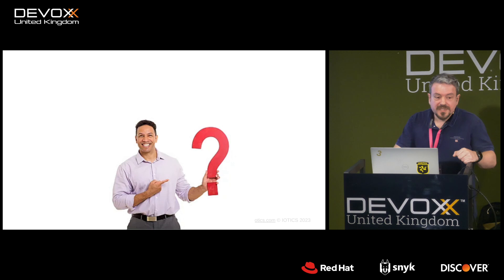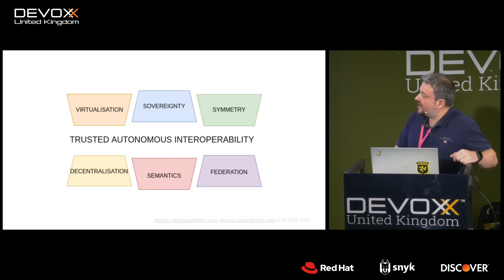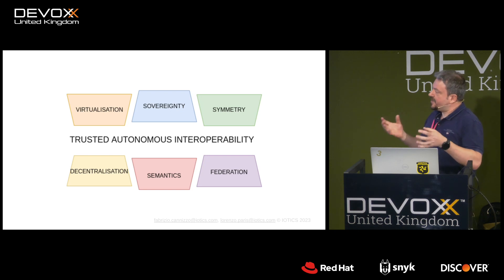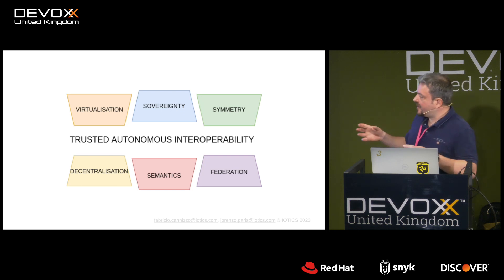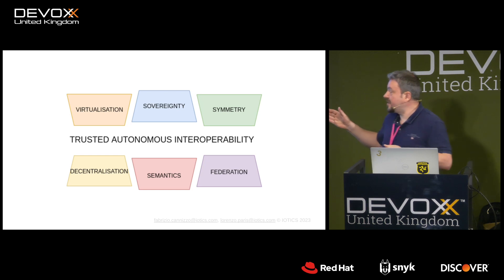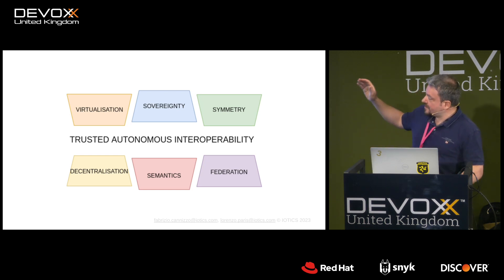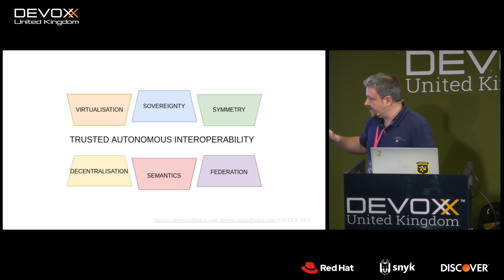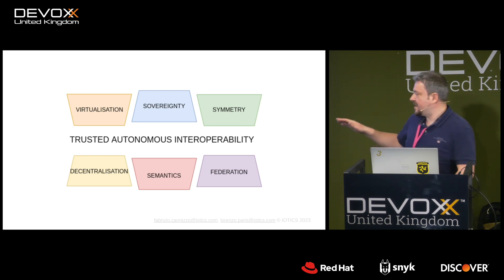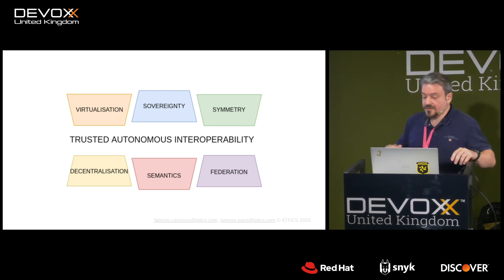Conceptually there are six pillars any architecture must sit on to provide trusted autonomous interoperability: virtualization, sovereignty, symmetry, decentralization, semantics, and federation.